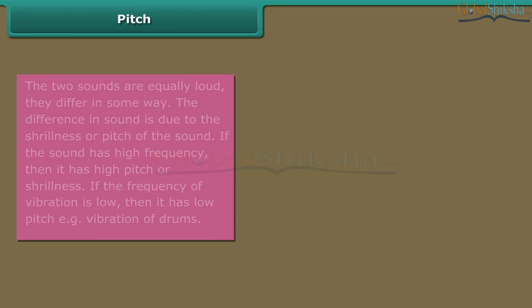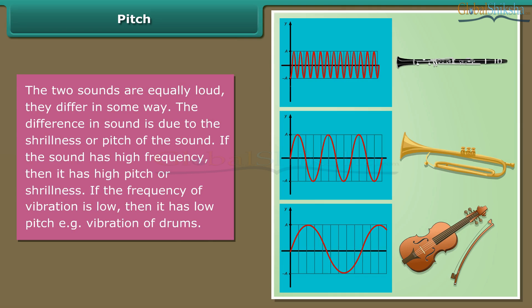Pitch. The two sounds are equally loud. They differ in some way. The difference in sound is due to the shrillness or pitch of the sound. If the sound has high frequency, then it has high pitch or shrillness. If the frequency of vibration is low, then it has low pitch, that is, vibration of drums.